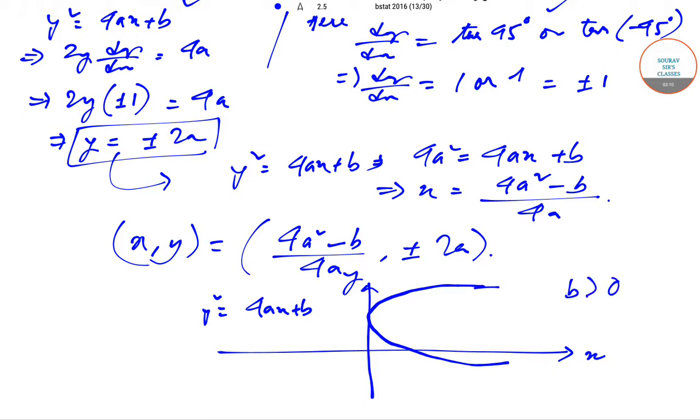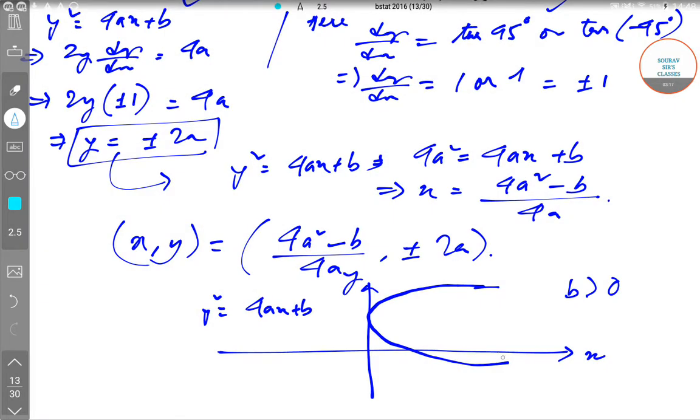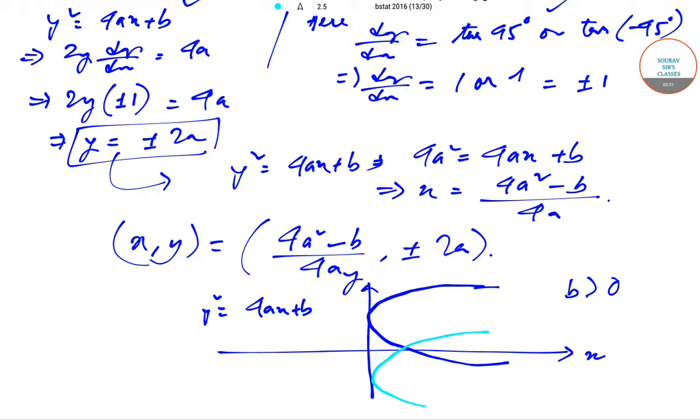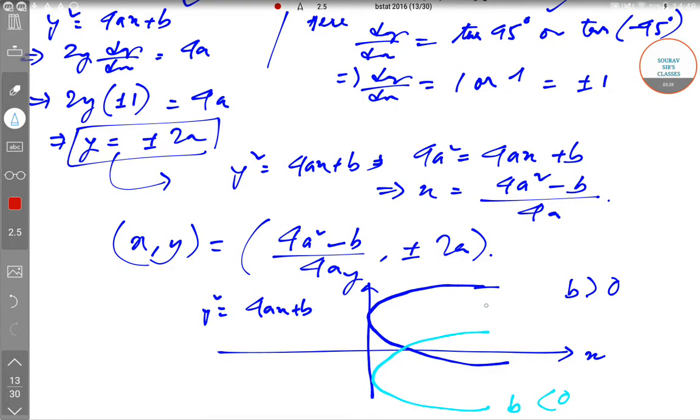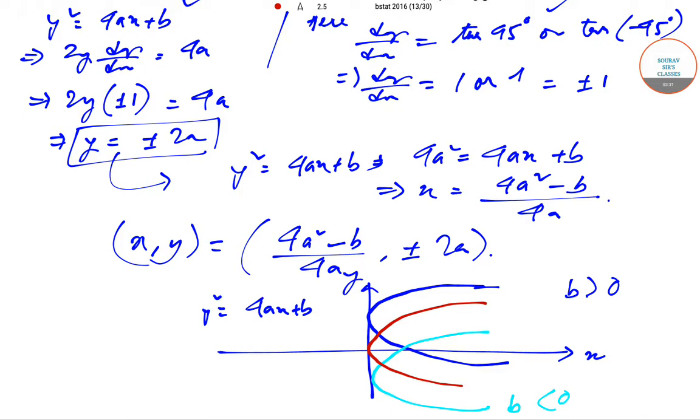If b is greater than 0, and if b is less than 0, then let me use a separate color for b < 0—this will look somewhat like this. If b is greater than 0, and if b is equal to 0, this is for b = 0.